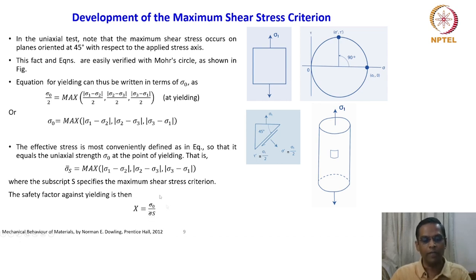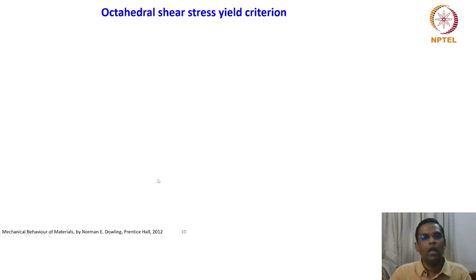This is the safety factor against yielding, x = σ₀ / σ̄ₛ, similar to what we have seen in the normal fracture criterion.